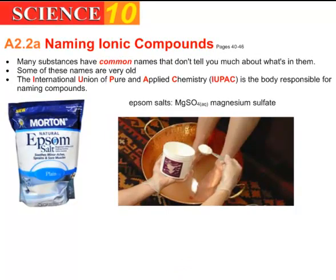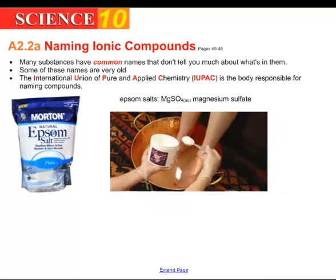Some of these names are very old. Take, for example, Epsom salts. Its formula is actually MgSO4. It's known as magnesium sulfate, and that is the IUPAC name for that compound. That stands for the International Union of Pure and Applied Chemistry. These are the people who make sure that we're all using the same rules to name our compounds.